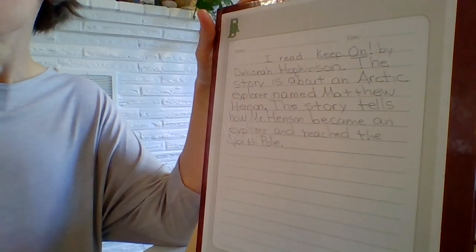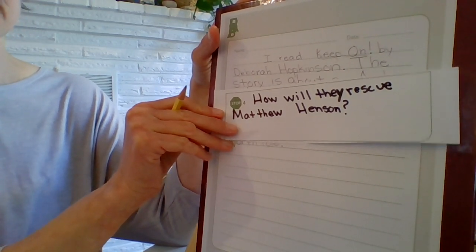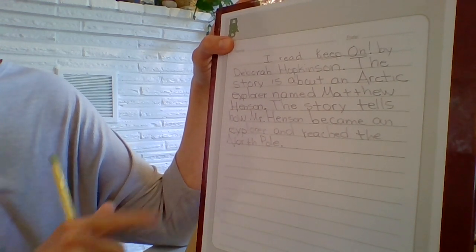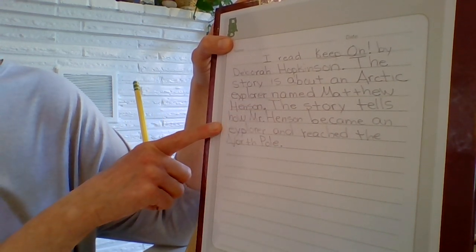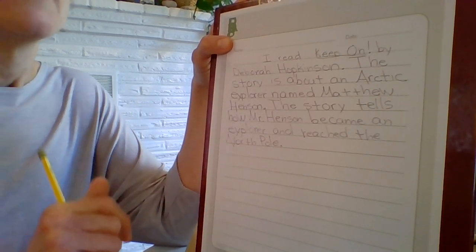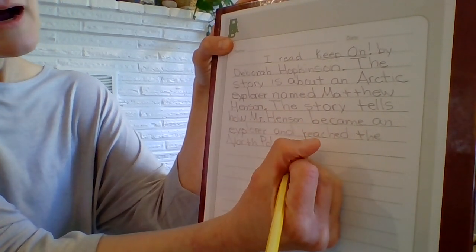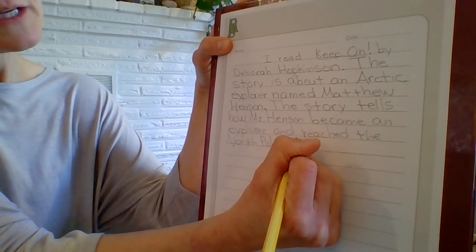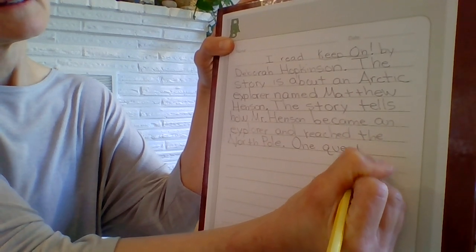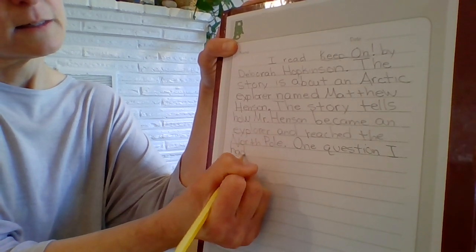The question that I'm going to talk about is: how will they rescue Matthew Henson? But I'm not just going to write that sentence right here, because it wouldn't make sense to say, 'the story tells how Mr. Henson became an explorer and reached the North Pole. How did they rescue Matthew Henson?' I need to introduce my question a little bit more. So I'm going to introduce it by using the phrase, 'one question I had was.'